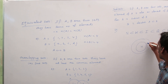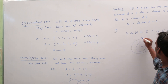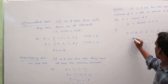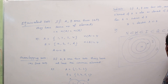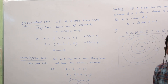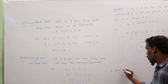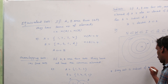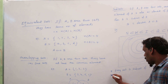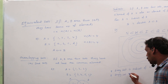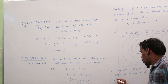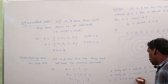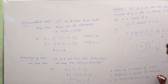So N ⊆ W ⊆ integers ⊆ rational numbers ⊆ real numbers. Every set is a subset of itself. Empty set is a subset of every set. If A is a subset of B and B is a subset of C, then A is a subset of C.